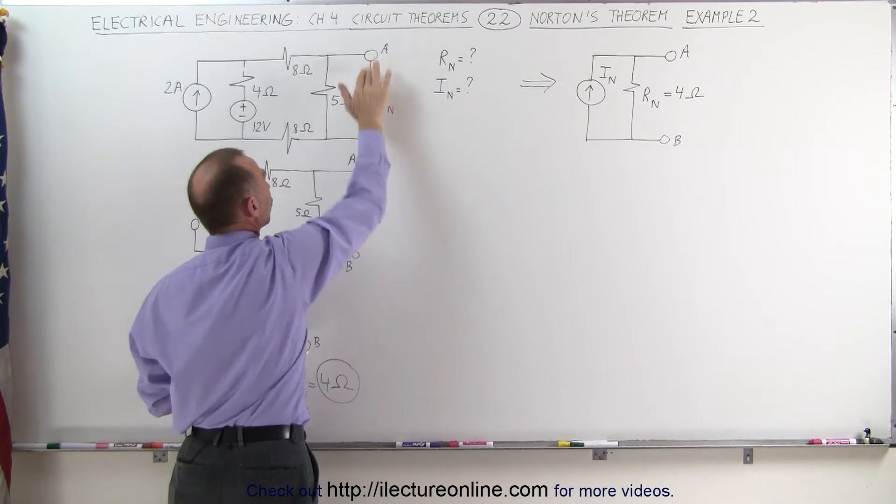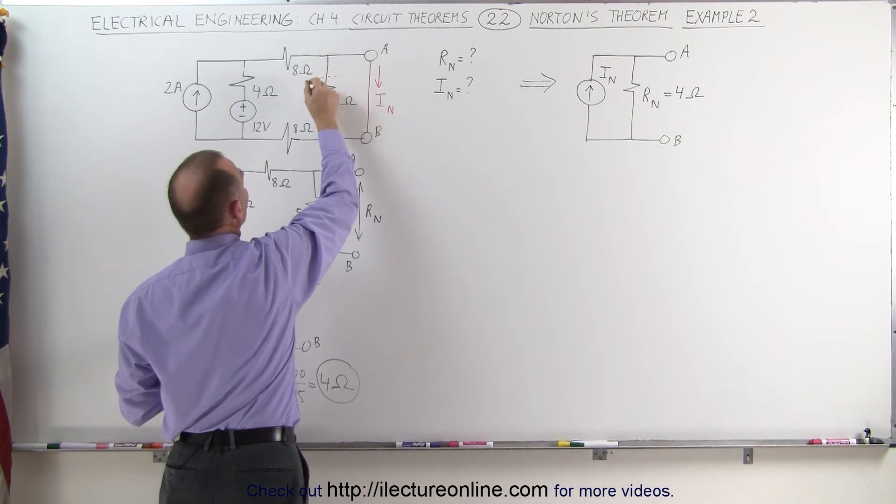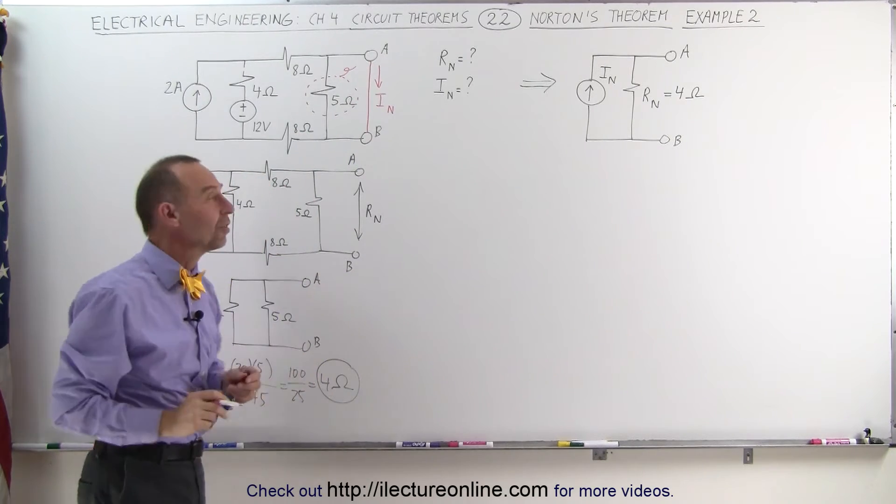all of it will flow through the short right here, bypassing the 5 ohm resistor. Which means that this acts as if this is not even there. So it's basically like that 5 ohm resistor does not exist.